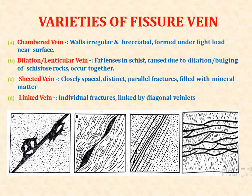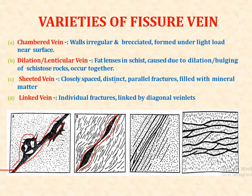There are a variety of fissure veins. The first one is the chambered vein, where the walls are irregular and all are brecciated — formed under light load near the surface. The second one is the dilation or lenticular type, which are flat lenses caused due to dilation or bulging in the sister rock, and they occur together.